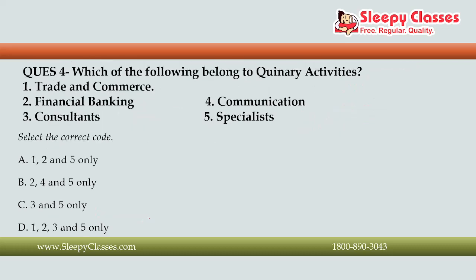The next question is: which of the following belong to quinary activity? First, trade and commerce. Second, financial banking. Third, consultants. Fourth, communication. Fifth, specialists. The correct answer is Option C, that is 3 and 5 only — consultants and specialists are quinary activities, whereas trade and commerce, financial banking, and communication belong to the tertiary sector.